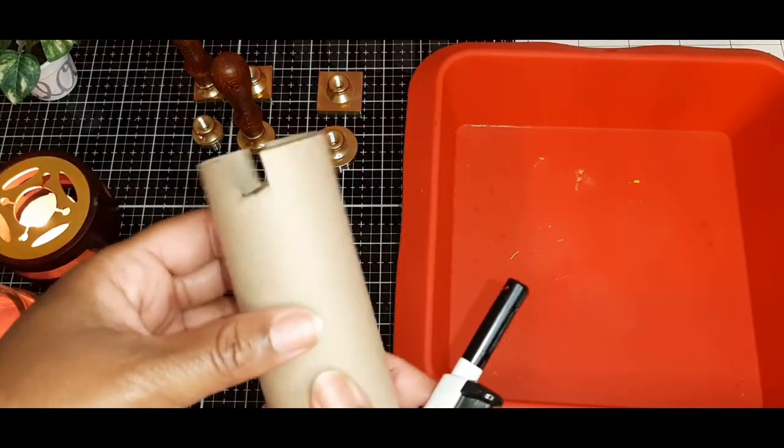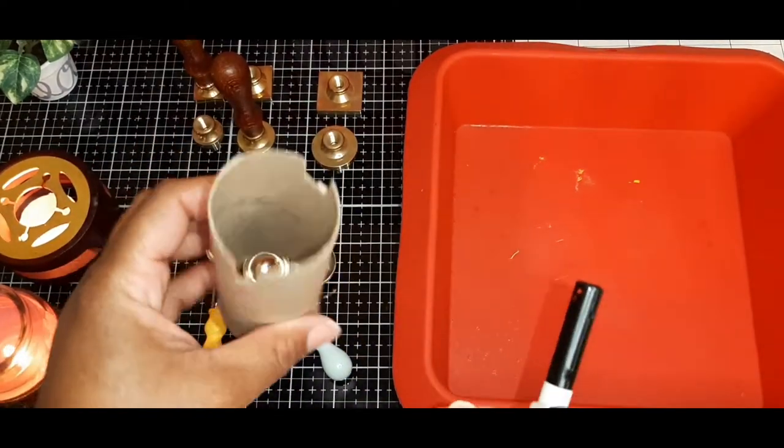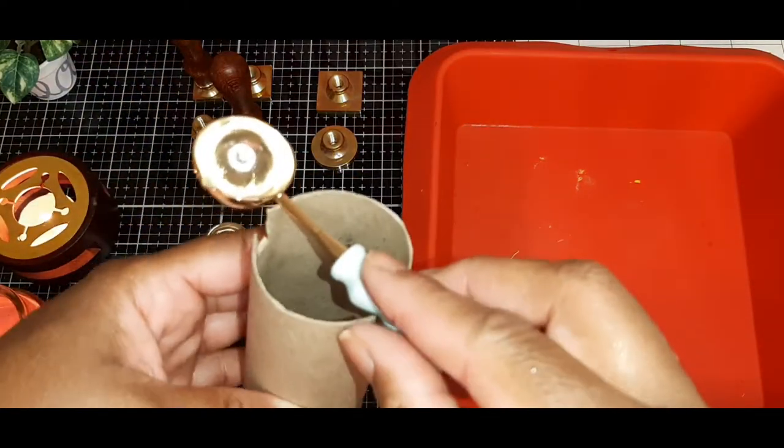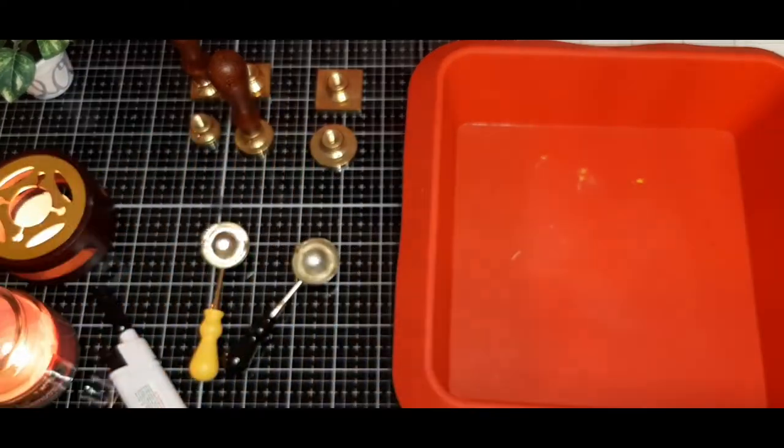Because I didn't have a second burner, I used this toilet paper roll and cut some notches in it. And that is what I'm using to hold the spoon over the candle.